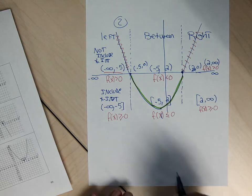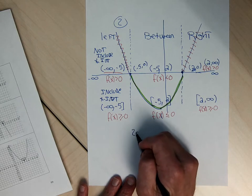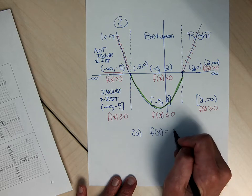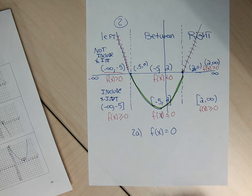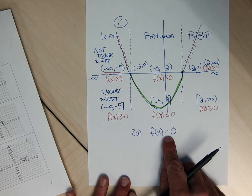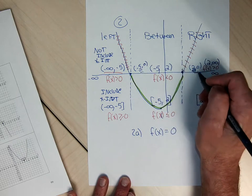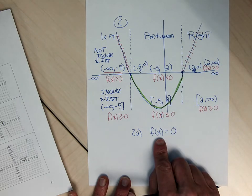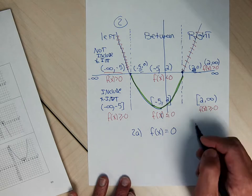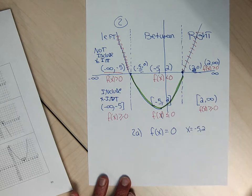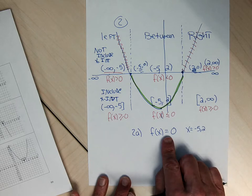There are five questions for number 2. Part 2a doesn't ask for an interval — it says find the values of x where y equals 0. This isn't calling out an interval; it's asking for the specific x-coordinates where y equals 0. That's going to be x equal to negative 5 and x equal to 2. This is not an inequality, so it's not asking for an interval, it's asking for specific x values.